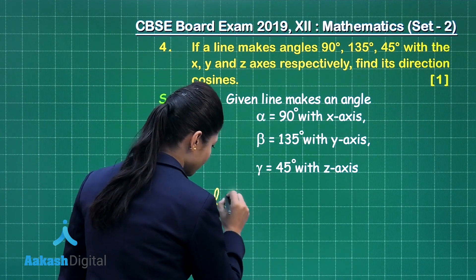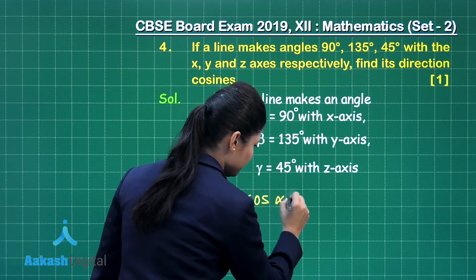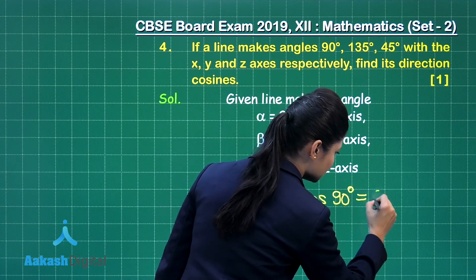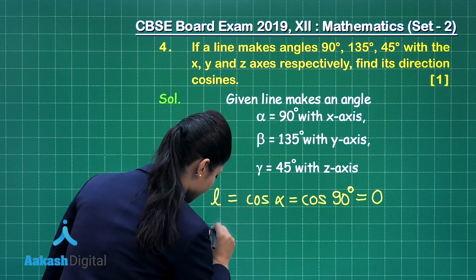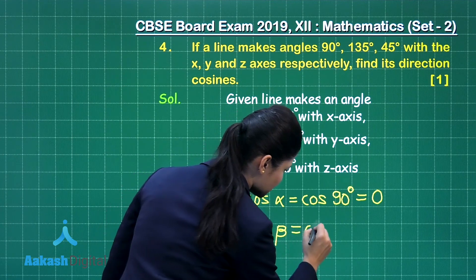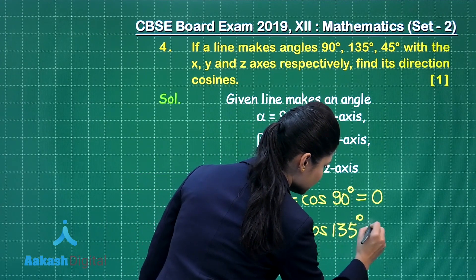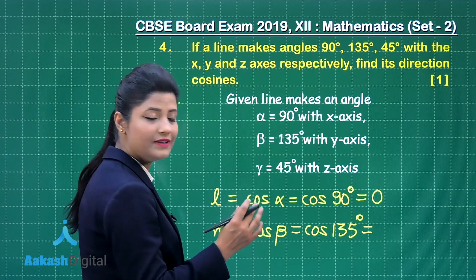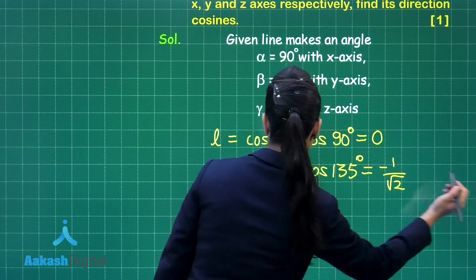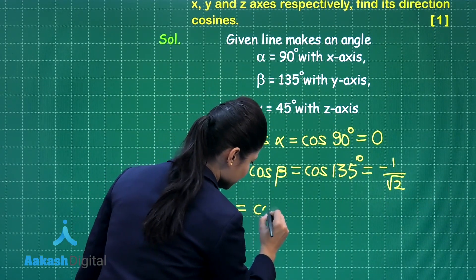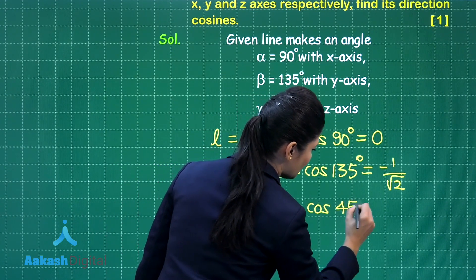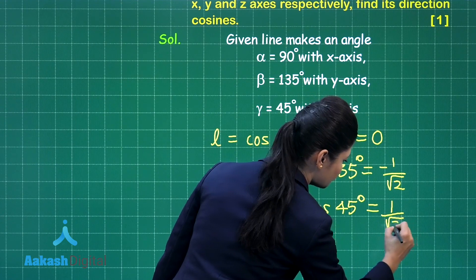The value of L will be given by cos(alpha), which is cos(90°), so cos(90°) = 0. Next, M is given by cos(beta), which is cos(135°), and the value of cos(135°) is −1/√2. Moving on to N, I get cos(gamma) = cos(45°), where the value of cos(45°) is 1/√2.